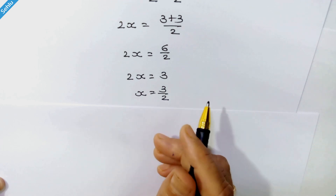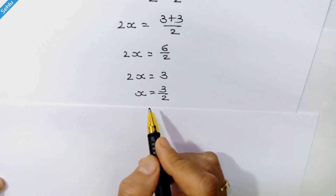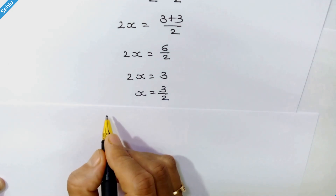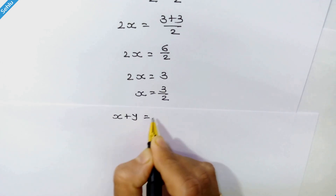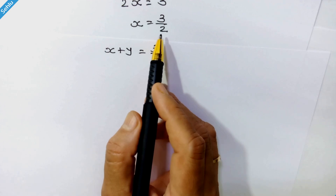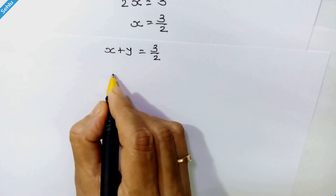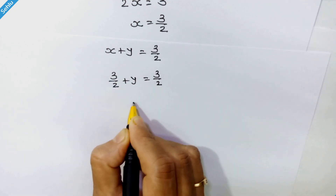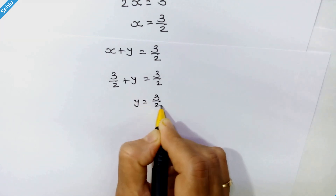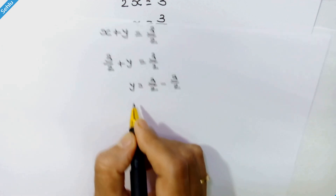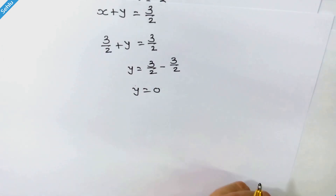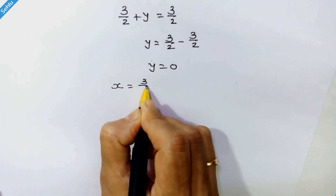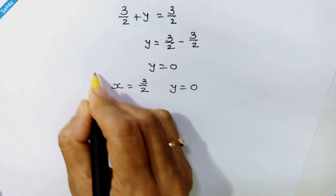Now we have the value of x. Substituting this value of x into equation 3, which is x plus y equals 3 upon 2, we put 3 upon 2 in place of x: 3 upon 2 plus y is equal to 3 upon 2. So y is equal to 3 upon 2 minus 3 upon 2, which gives y is equal to 0. The answers are x is equal to 3 upon 2 and y is equal to 0.